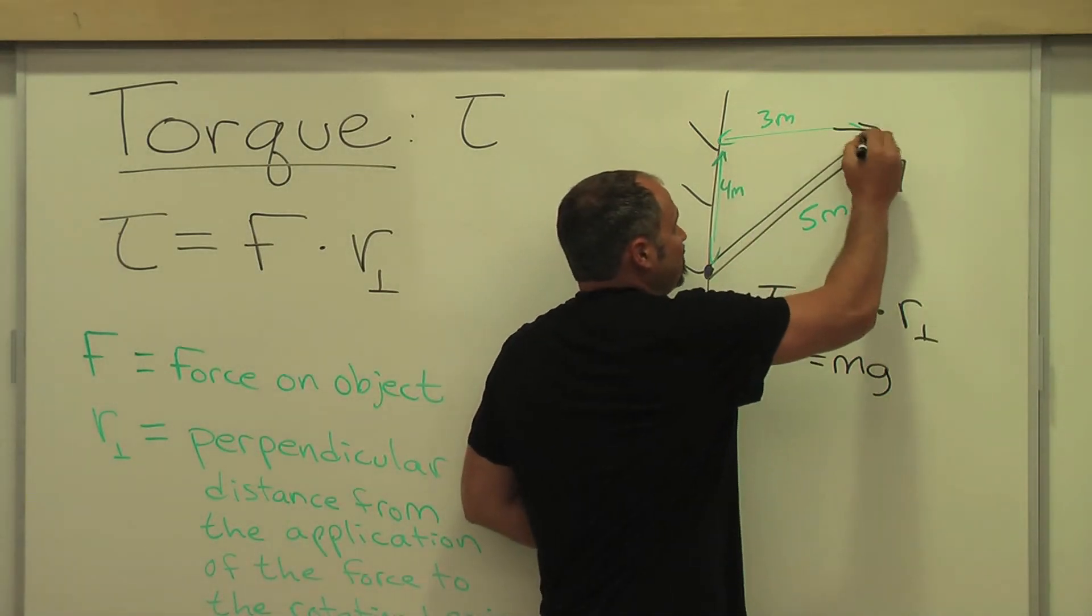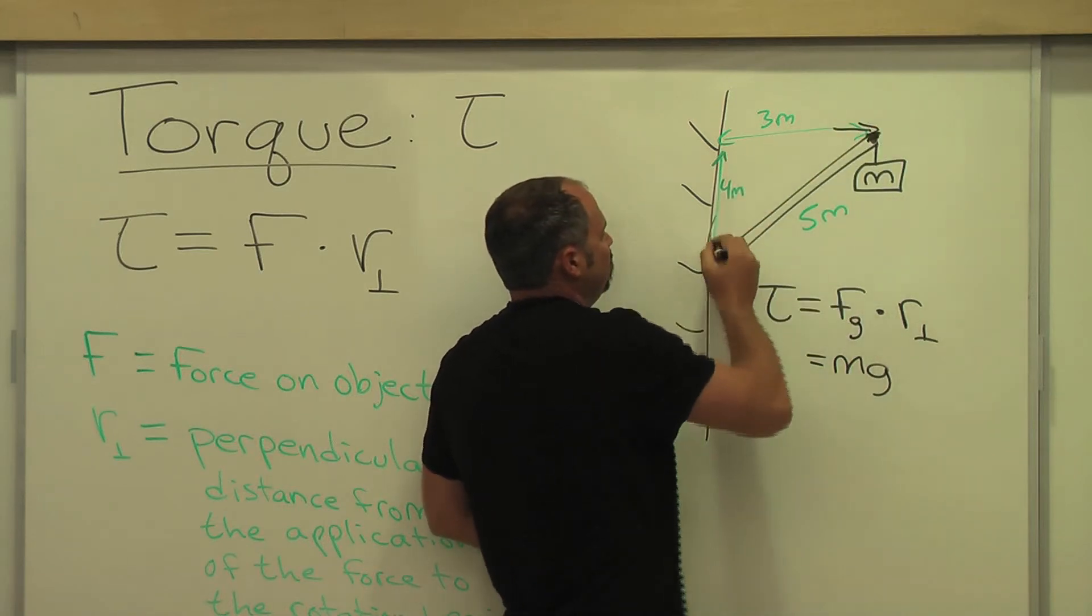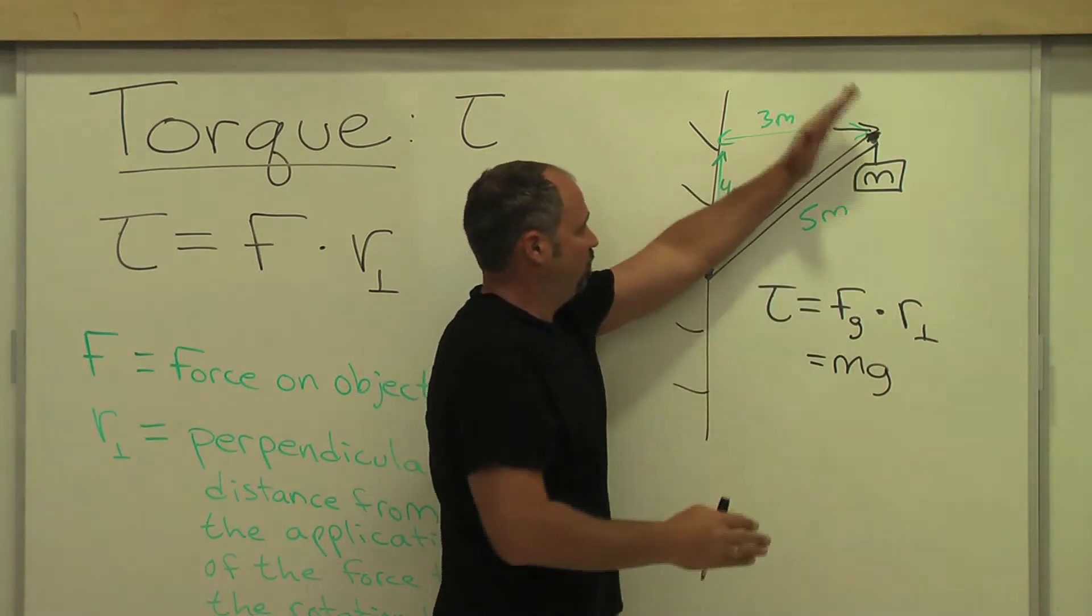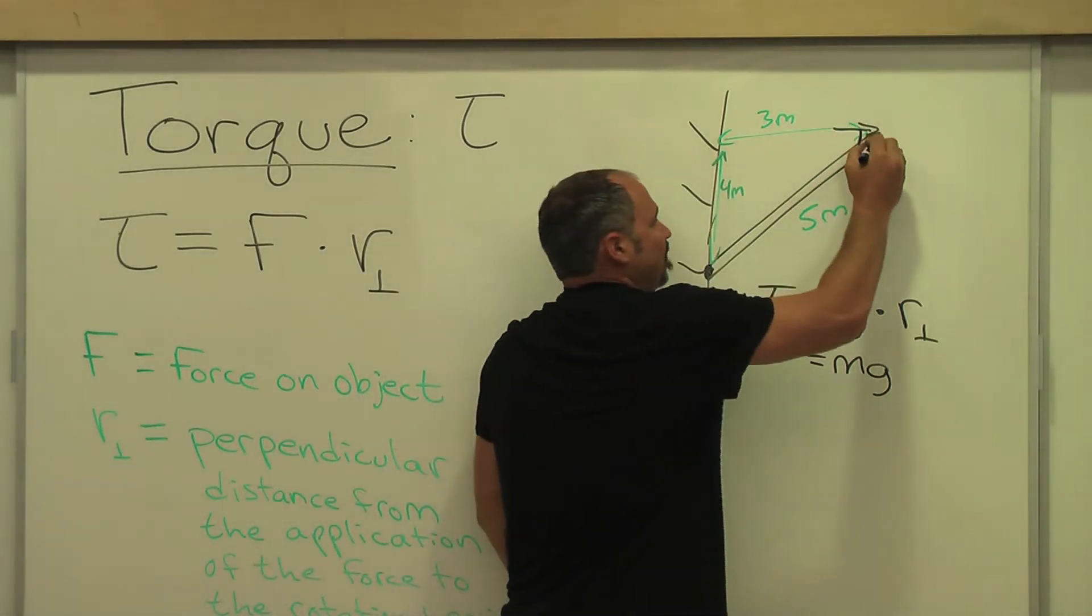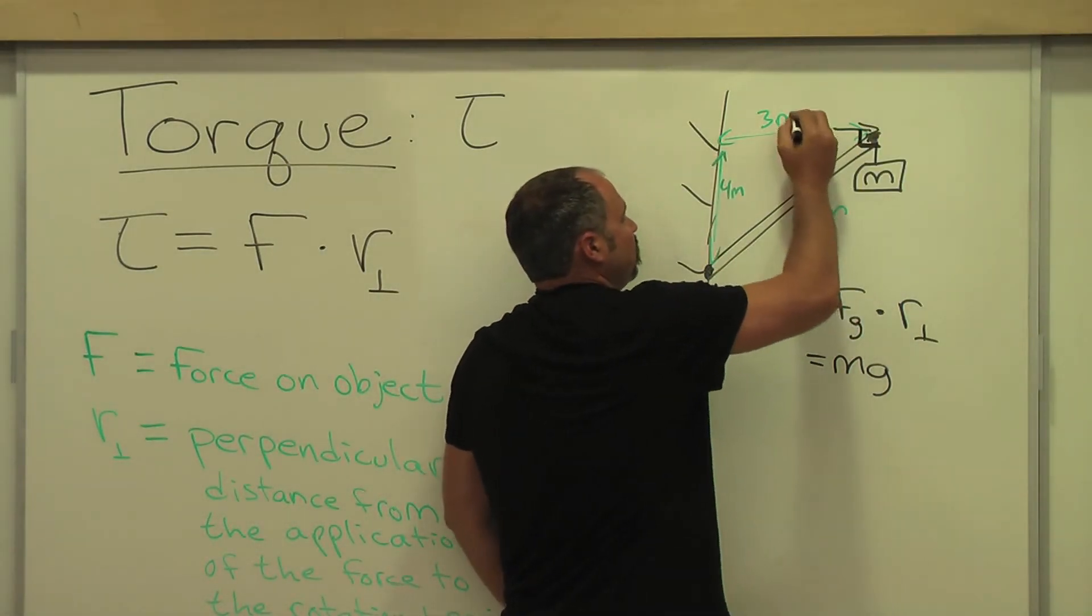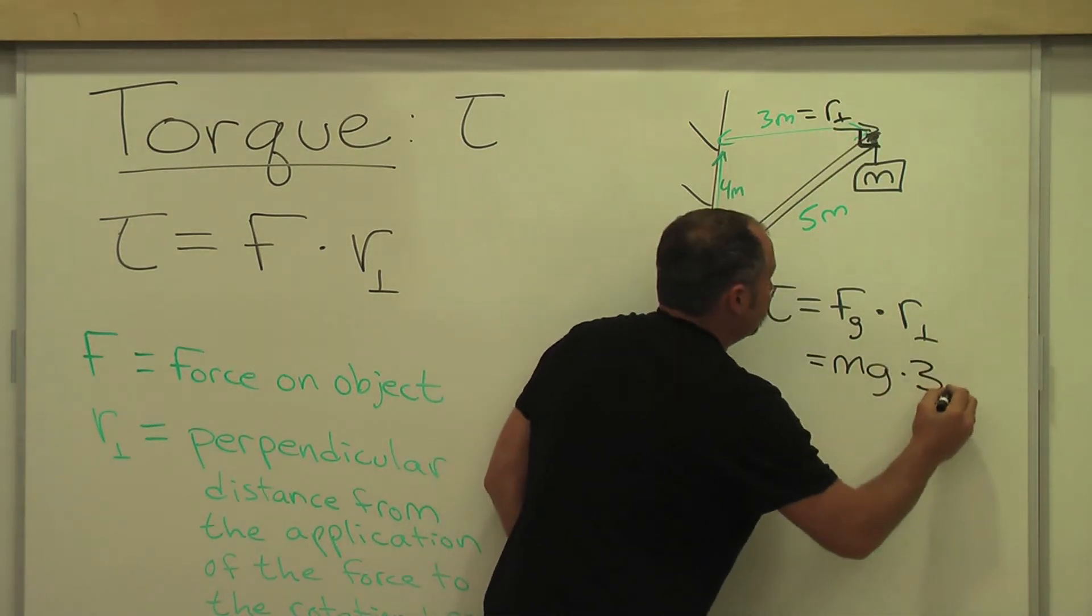3 meters, because this distance here from the application of the force to the rotation axis, because it's going to rotate like this. So this is our rotation axis. Well, that makes a right angle. So this is our r perpendicular. So it's times 3 meters.